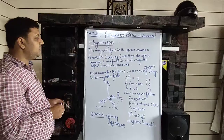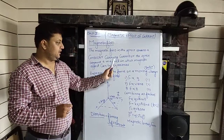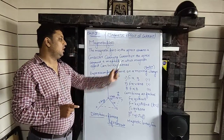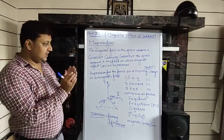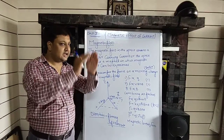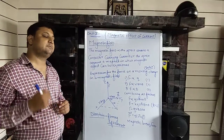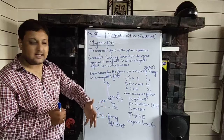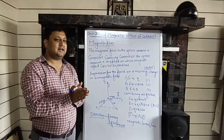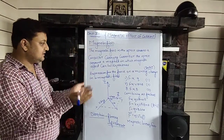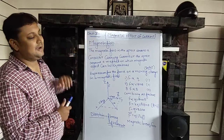What is a magnetic field? The magnetic field is the space around a conductor carrying current, or the space around a magnet in which the magnetic effect can be experienced. This is called the magnetic field.